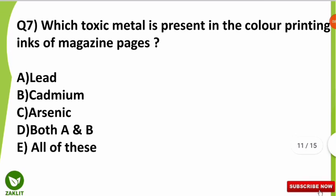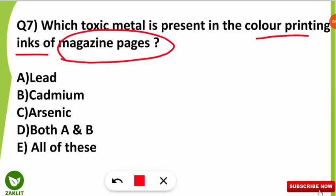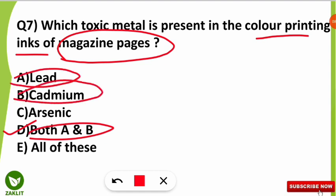The seventh question was: which toxic metal is present in the color printing inks of magazine pages? The correct option is D — both A and B — meaning both lead and cadmium are present in the color printing inks of magazine pages, and both are toxic metals.